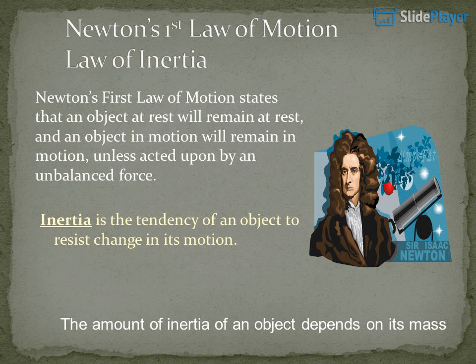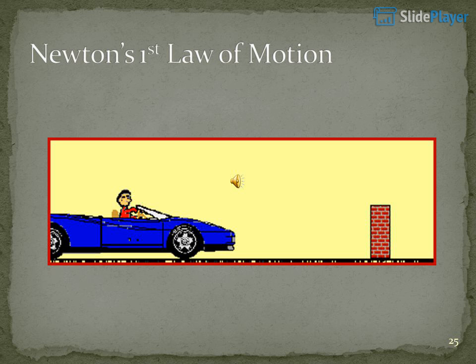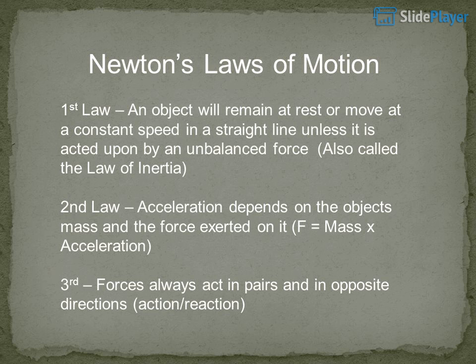Newton's first law of motion — the law of inertia — states that an object at rest will remain at rest, and an object in motion will remain in motion, unless acted upon by an unbalanced force. Inertia is the tendency of an object to resist change in its motion. The amount of inertia of an object depends on its mass.